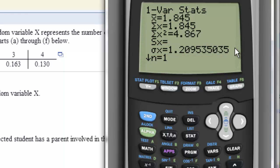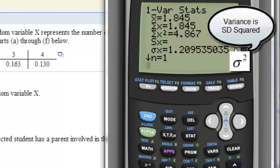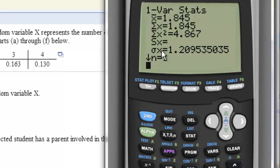Now if you do need the variance, remember that the variance is the square of the standard deviation. So if you square this number you'll get the variance.